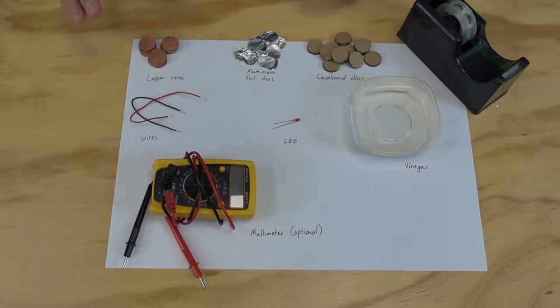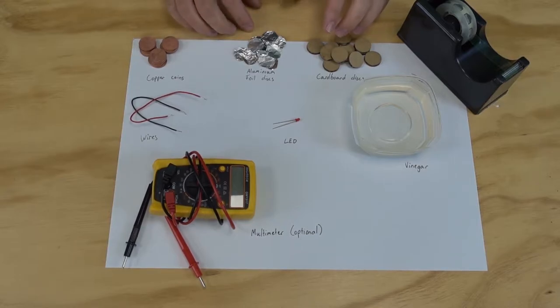We're going to need some copper coins, some one or two cent coins. If you've never seen these before, ask your parents, they may have some sitting around. We need some aluminum foil discs and some cardboard discs. I've made these by simply putting my coin on, tracing around and cutting them out. We want them about the same size as the coin. It doesn't matter if they're a little bit rough.